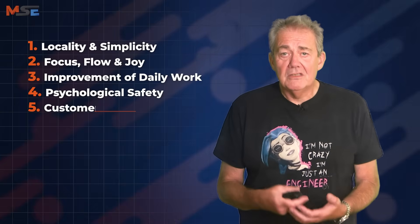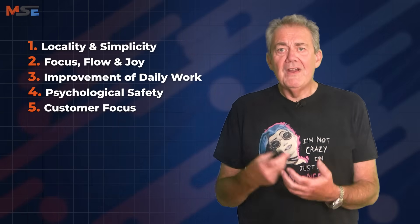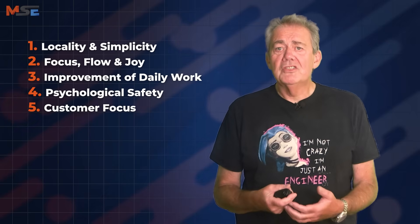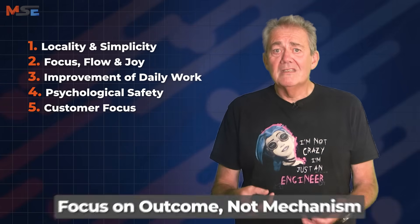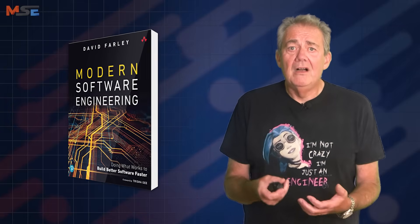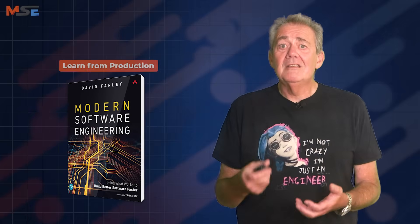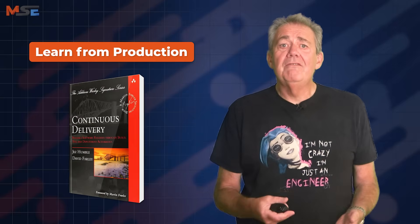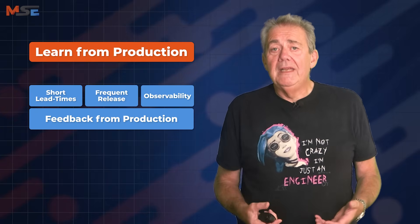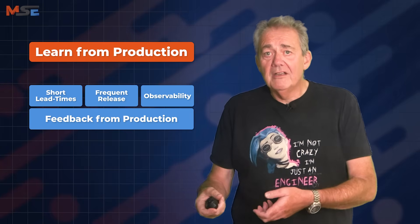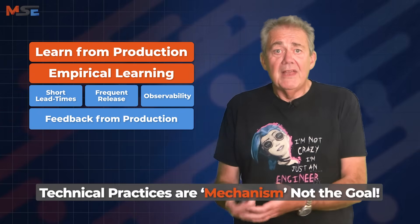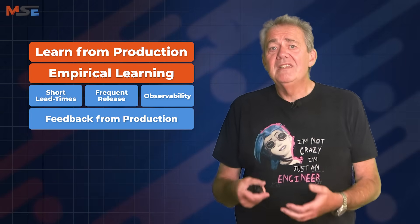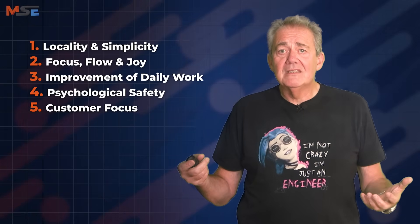The last of Gene's five ideals is customer focus. This is where both of our worlds very strongly converge. In The Unicorn Project, customer focus means remembering that all the JIRA tickets, status meetings, architecture diagrams, and governance boards ultimately only exist to serve a real human need of some kind. In Modern Software Engineering, I argue that software engineering isn't about documents or processes — it's about learning what works in the real world. And in Continuous Delivery, we operationalise this with shorter lead times, more frequent releases, observability, and feedback from production. Continuous delivery works because it aligns engineering work with customer outcomes, empirically and continuously. The technical practices are only good to the extent that they allow us to achieve this — they are not in themselves the real goal.